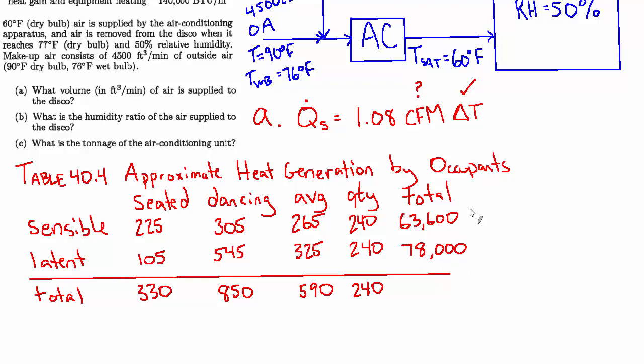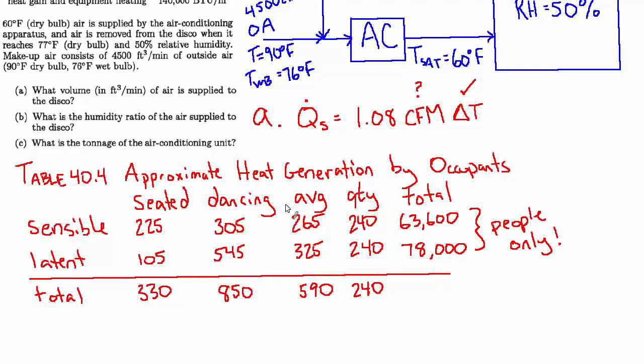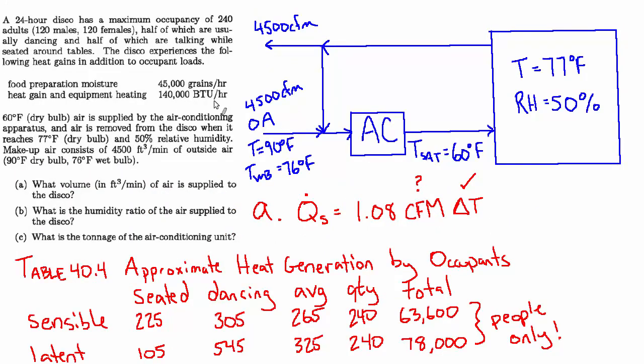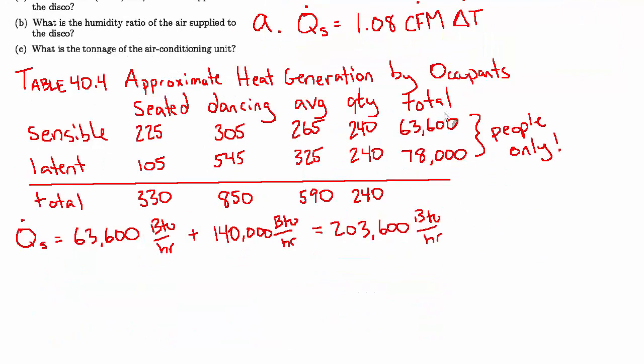Because we also have these latent and sensible contributions from food prep and other heat gain and equipment in the space, so we're going to have to include those. So for the moment, let's just tally up the sensible since that's what we care about for part A. We can say q dot s sensible heat load equals the 63,600 from the people plus this 140,000 BTUs per hour from the equipment. We don't need to worry about the food prep since that's latent, and that equals 203,600 BTUs per hour.